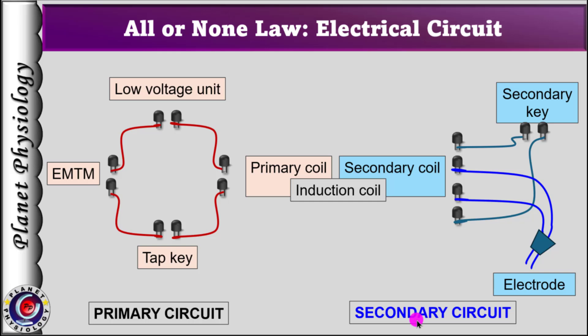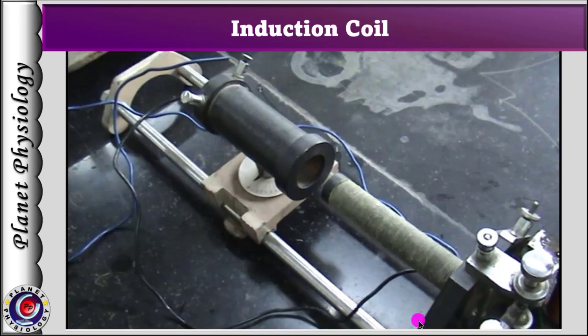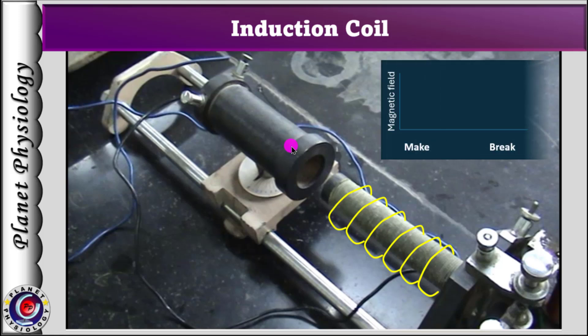In this experiment, the induction coil plays a very important role in deciding the strength of the stimulus. As the name suggests, it works on the principle of induced current. When the tap key is pressed, current flows in the primary coil in a circular fashion and develops a magnetic field around it. The change in the magnetic field induces current in the secondary coil and a stimulus is delivered to the tissue. This stimulus is called the make stimulus or make shock, as it is due to making of the circuit.